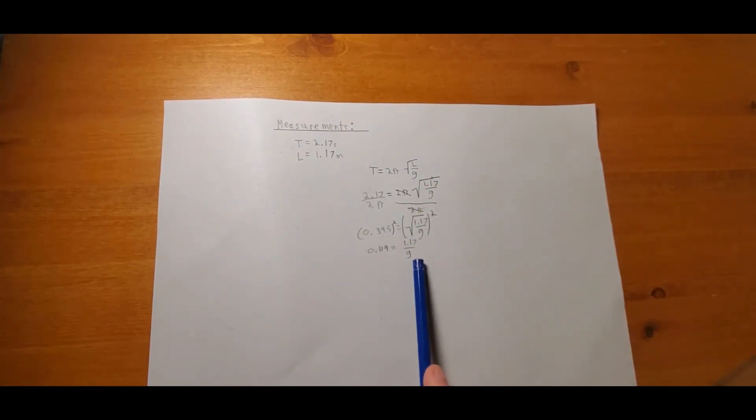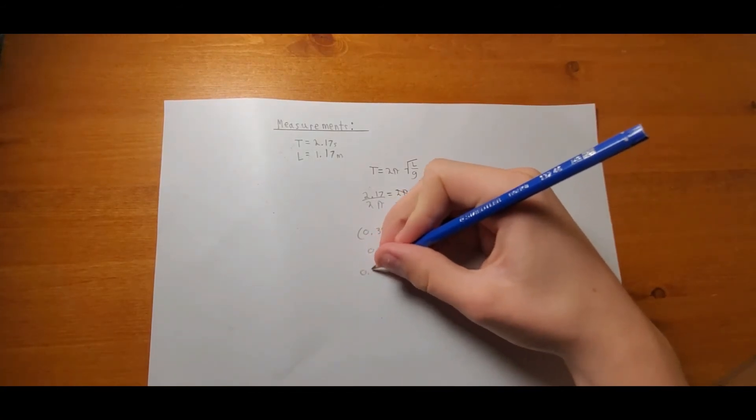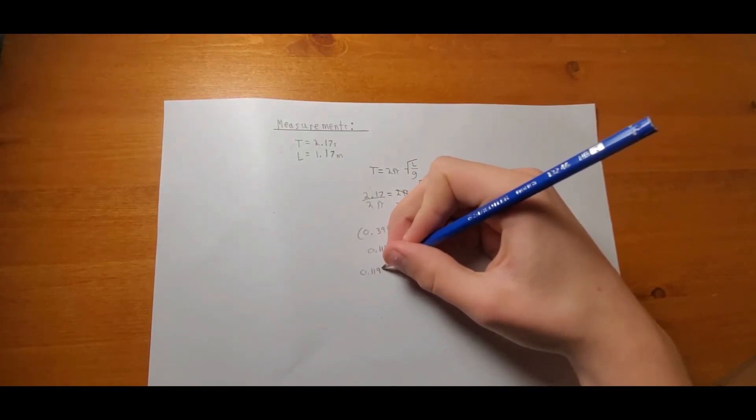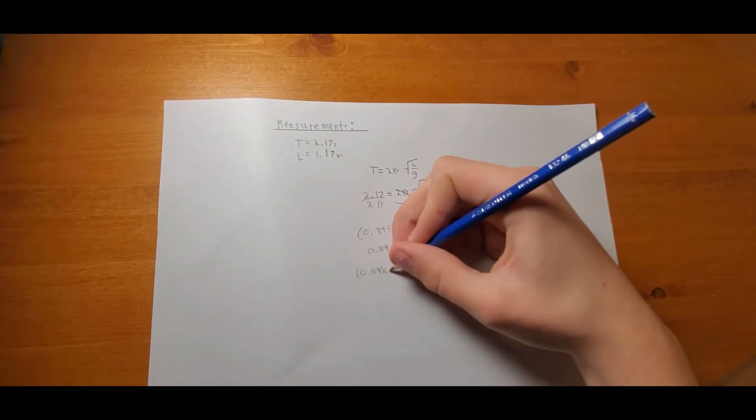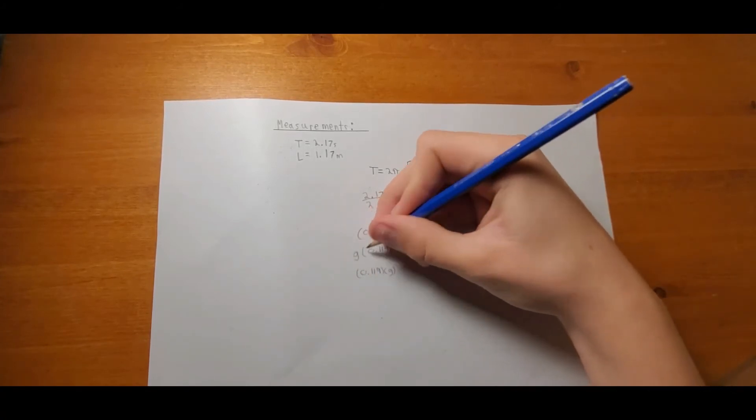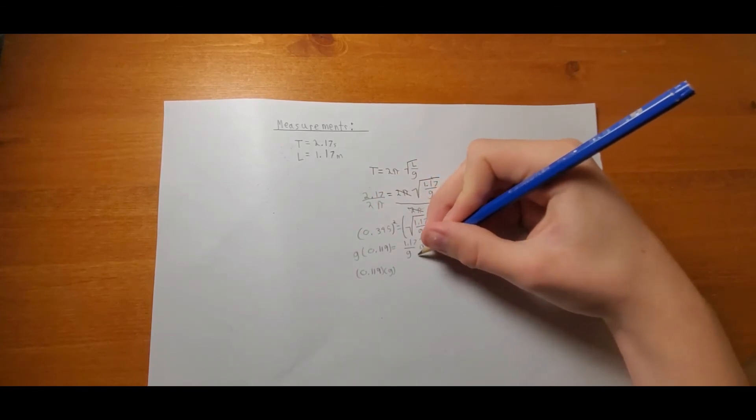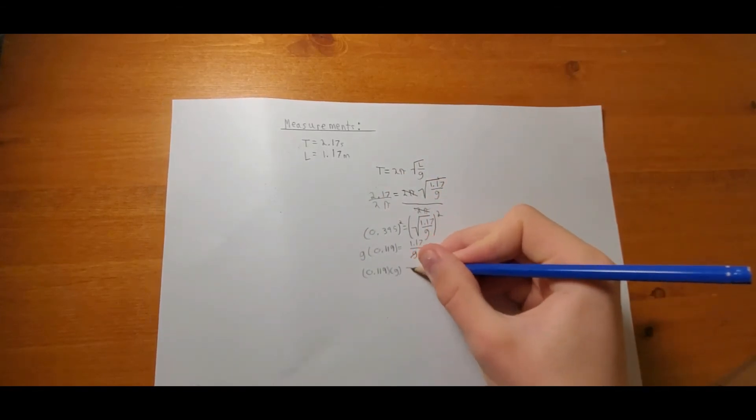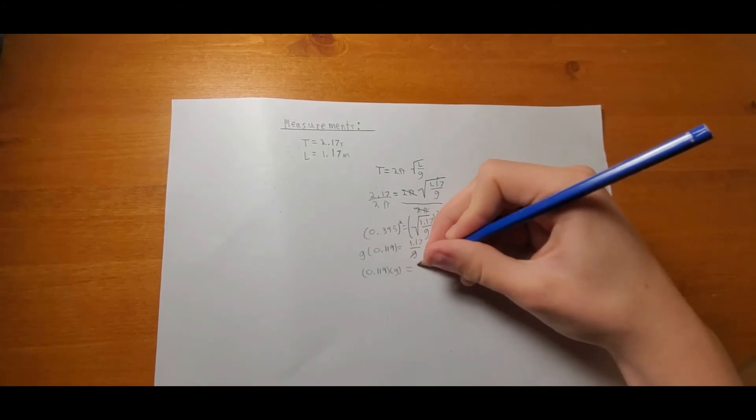Now, we're going to multiply both sides by g. And we get 0.119 multiplied by g. And keep in mind, if we multiply both sides by g, g is over here, cancel each other out. Just like that.